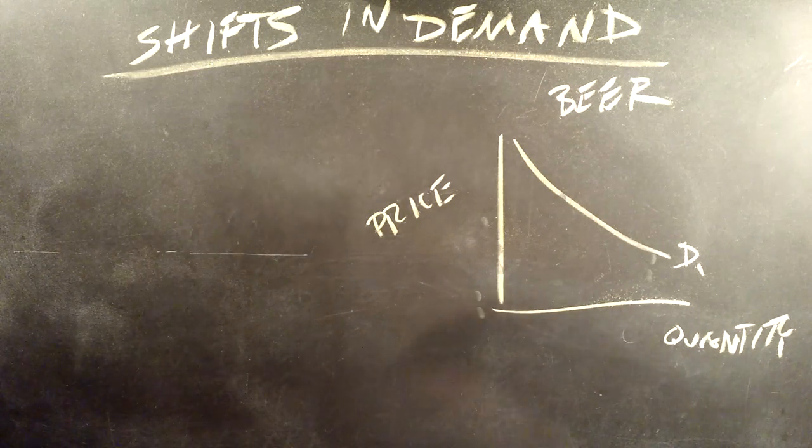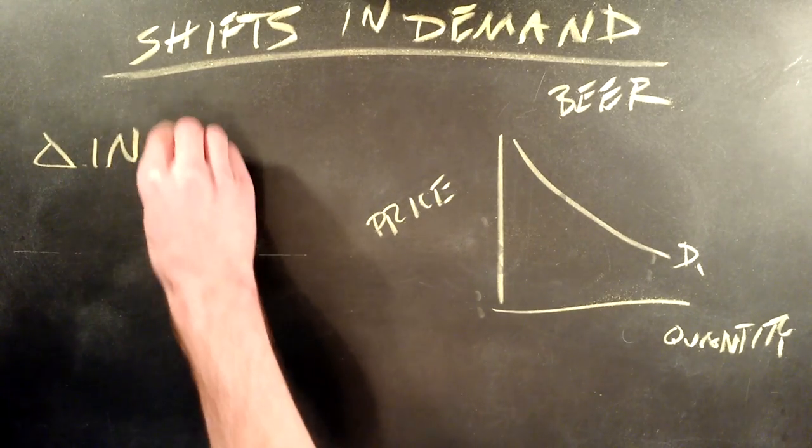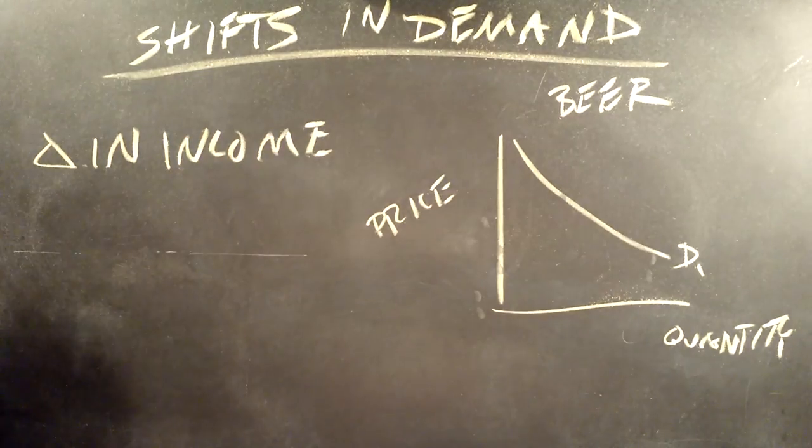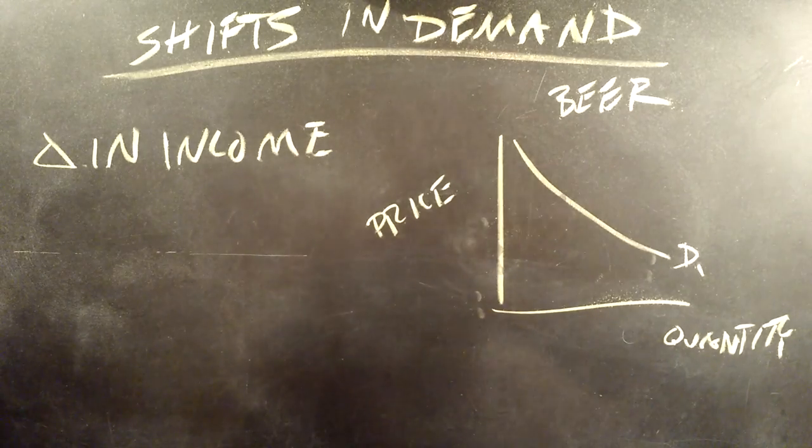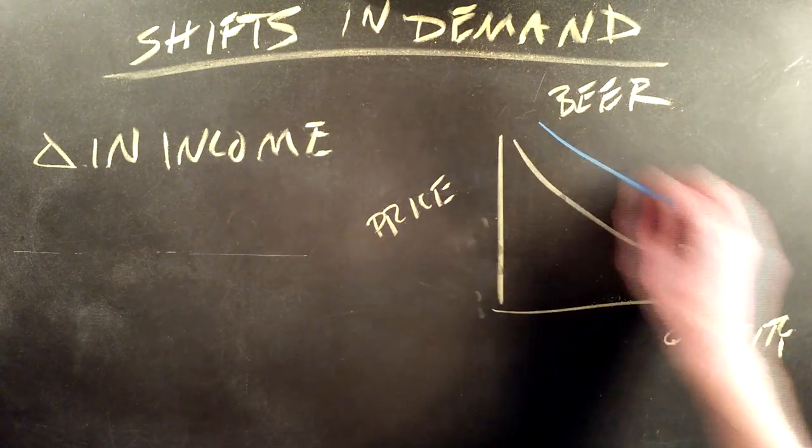We're going to talk about a few things which actually shift the demand curve. One of those things is a change in income. As income increases, people want more of every good at a given price. We can represent this by shifting the demand curve to the right.